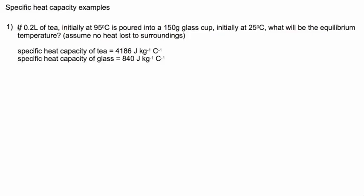The first one we're going to have some tea. So we have 0.2 liters of tea which is initially at 95 degrees Celsius poured into a 150 gram glass cup initially at 25 degrees Celsius. The question is what will be the equilibrium temperature? The hot tea will cool off, the relatively cool cup will heat up, and they will reach some sort of equilibrium. We're going to assume there's no heat loss to the surroundings.